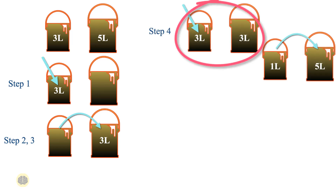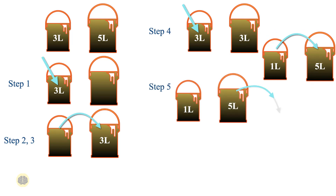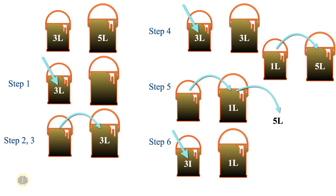In step 4, fill the 3-liter bucket again and pour it into the 5-liter bucket. When the 5-liter bucket is full, the remaining water in the 3-liter bucket is 1 liter. In step 5, empty the 5-liter bucket and fill it with that 1 liter. Fill the 3-liter bucket again and pour it into the 5-liter bucket — the result is 4 liters in the 5-liter bucket.